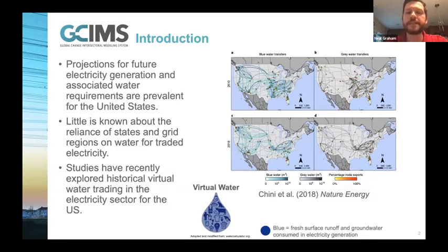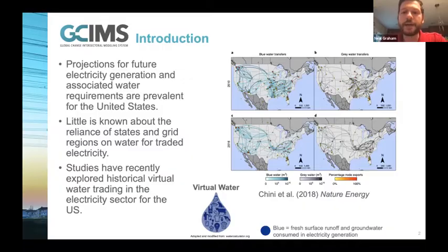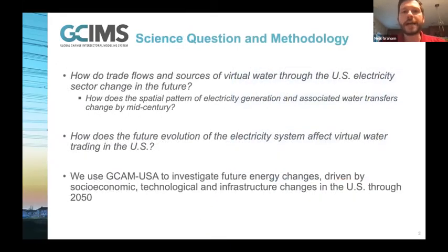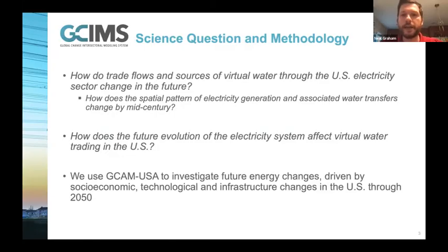Virtual water is basically the water consumed in electricity generation that is then transferred or traded outside of the originating area. The focus today is on blue water - fresh surface runoff and non-renewable groundwater sources - consumed within the electricity generation process. We want to know how trade flows and the sources of virtual water are going to change in the future, and whether there are any major spatial patterns that arise with the associated water transfers looking towards mid-century.